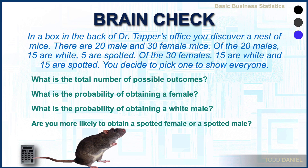You decide to pick one up at random. First of all, what is the total number of outcomes? We add together the total number of mice — 20 males and 30 females — for a total of 50. What is the probability of obtaining a female? Our desired outcome would be one of the 30 female mice divided by the total of 50, which gives us 0.60. What is the probability of obtaining a white male? Of the males, 15 are white — that will be our numerator — and the denominator is still 50. The result is 0.30.